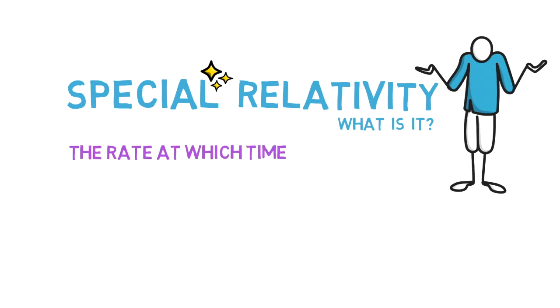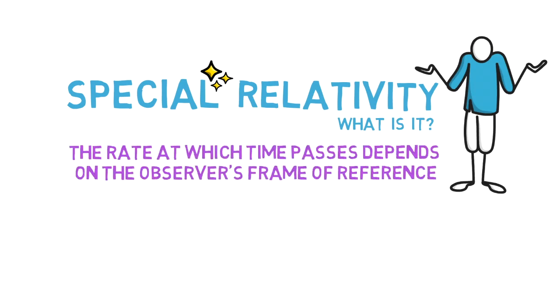Einstein called it special relativity. The rate at which time passes depends on the observer's frame of reference. Let's break that down. There are two things we have to understand.